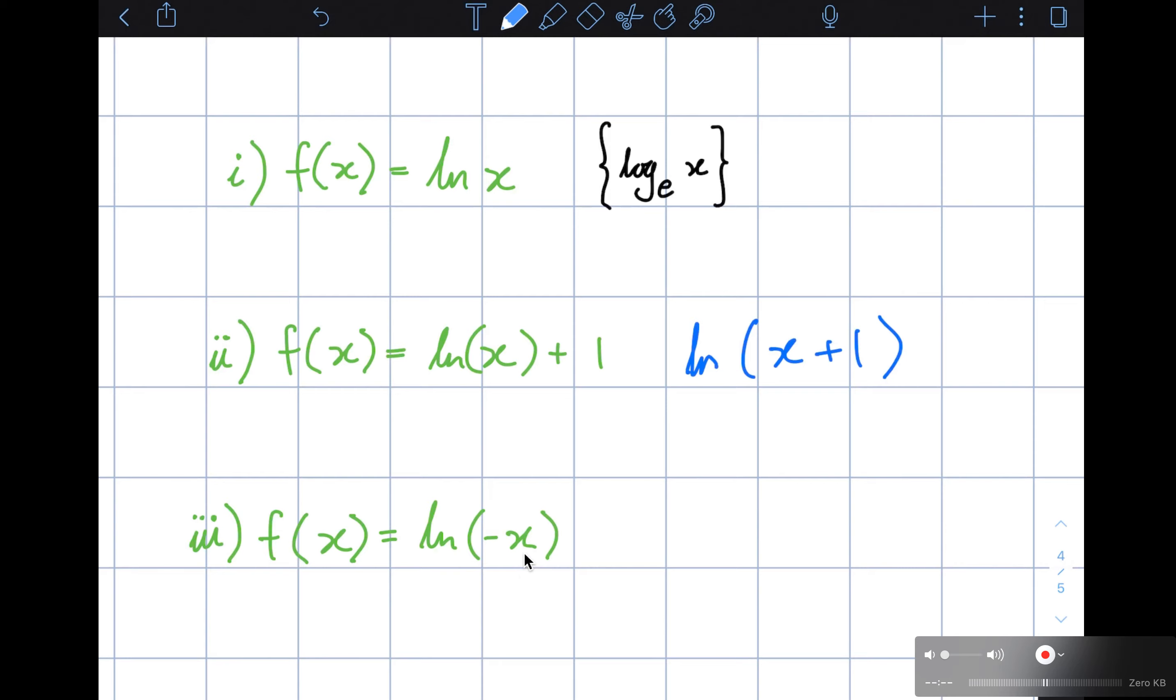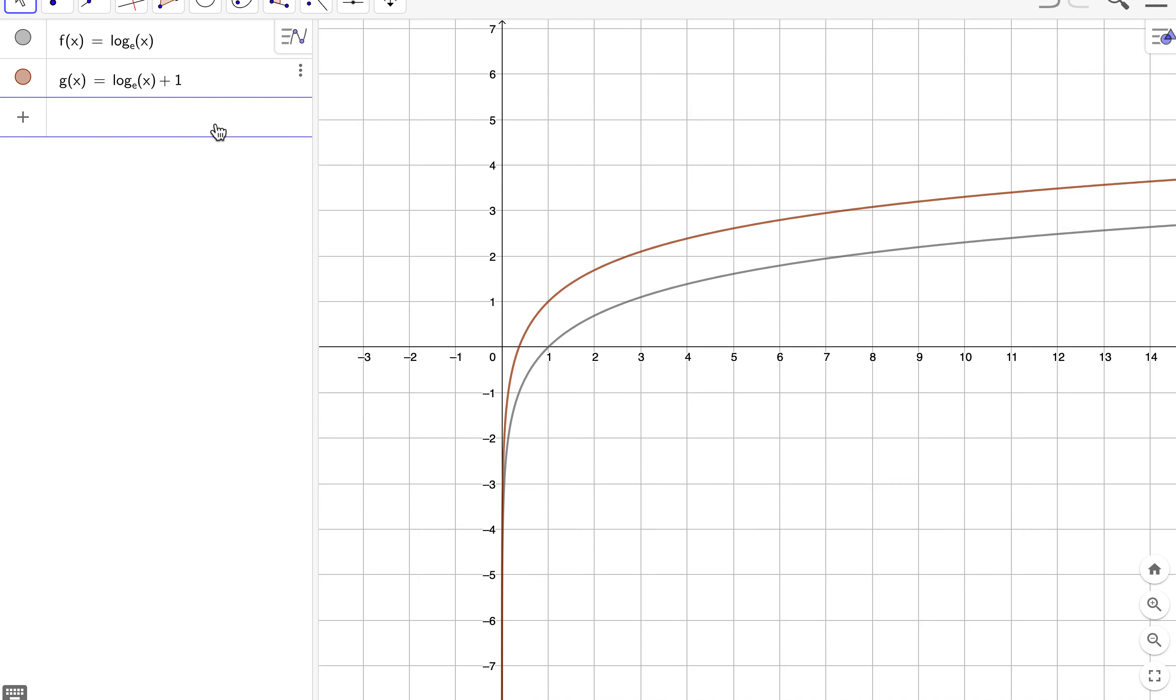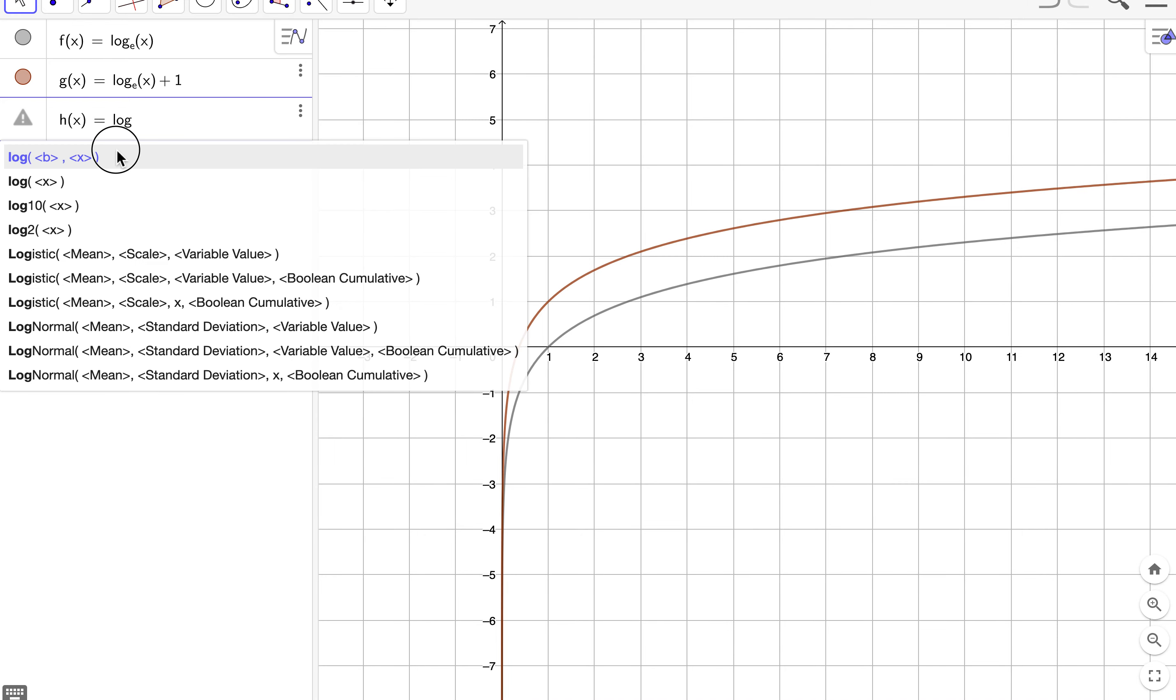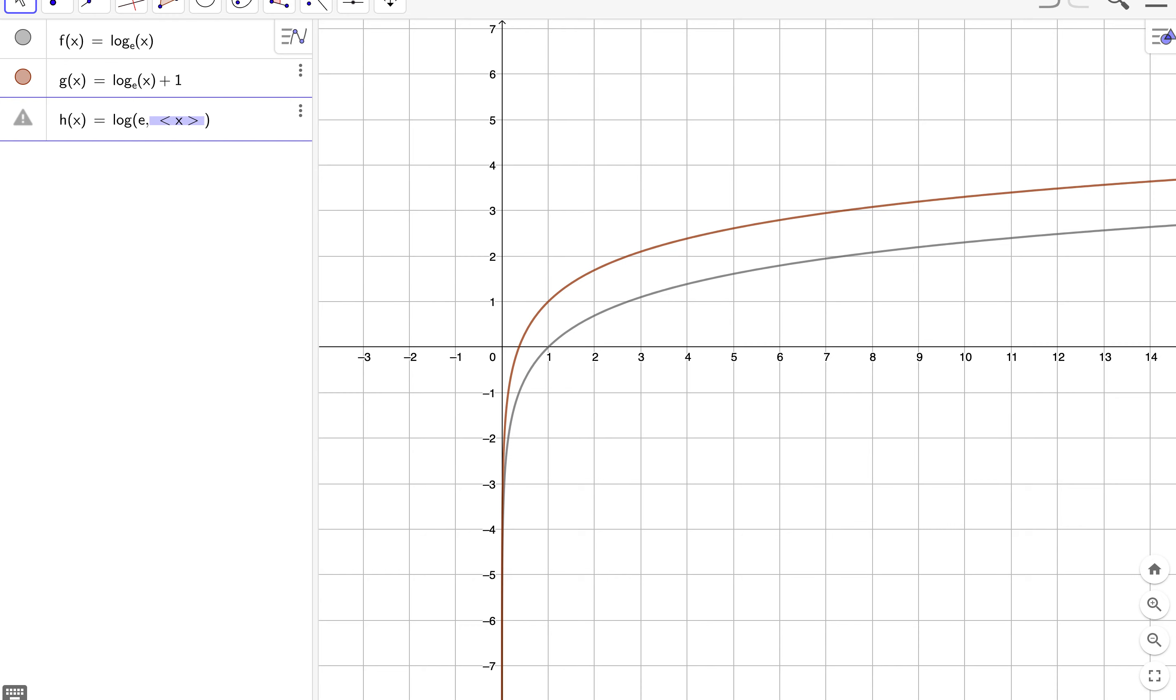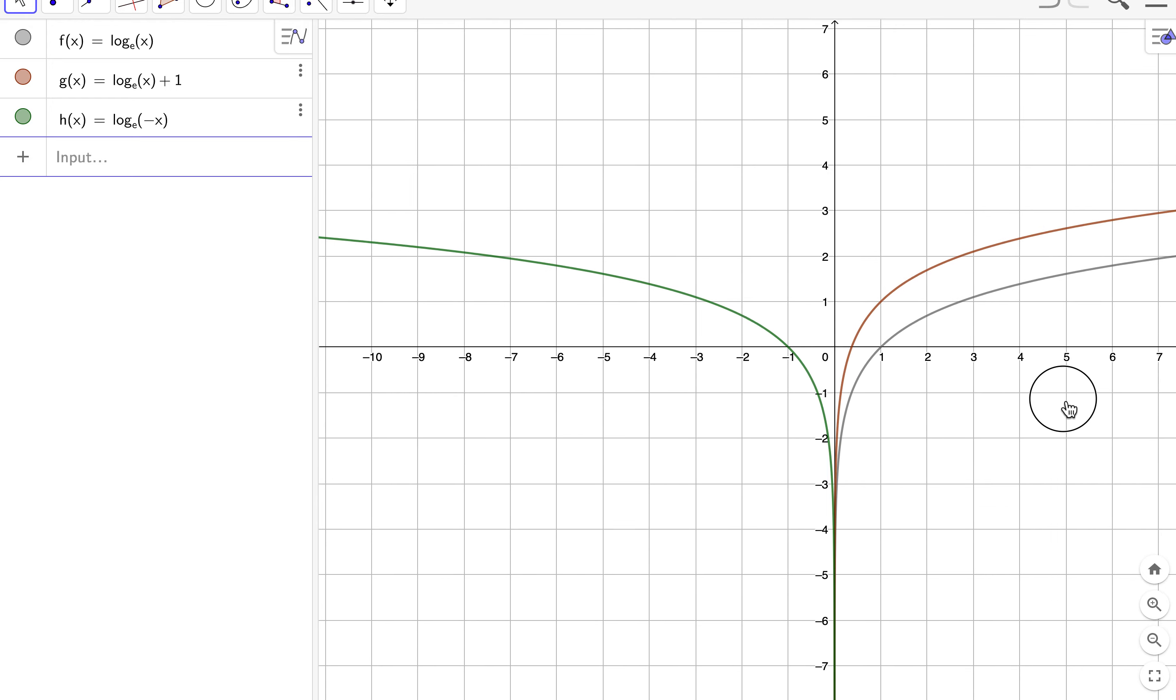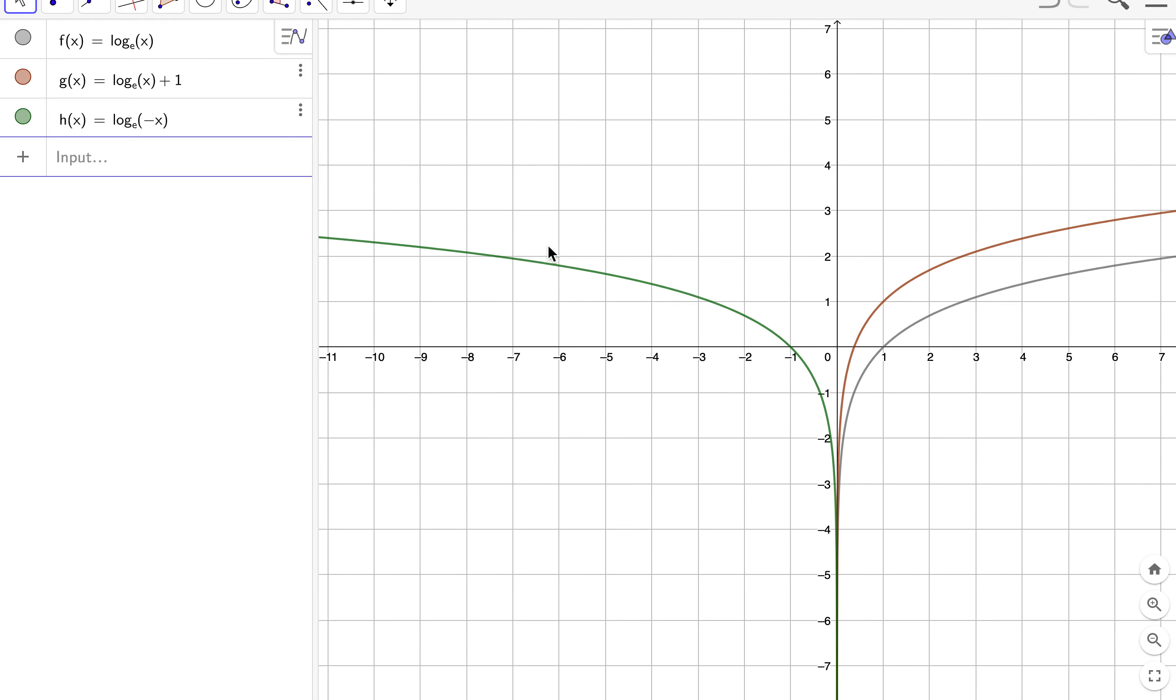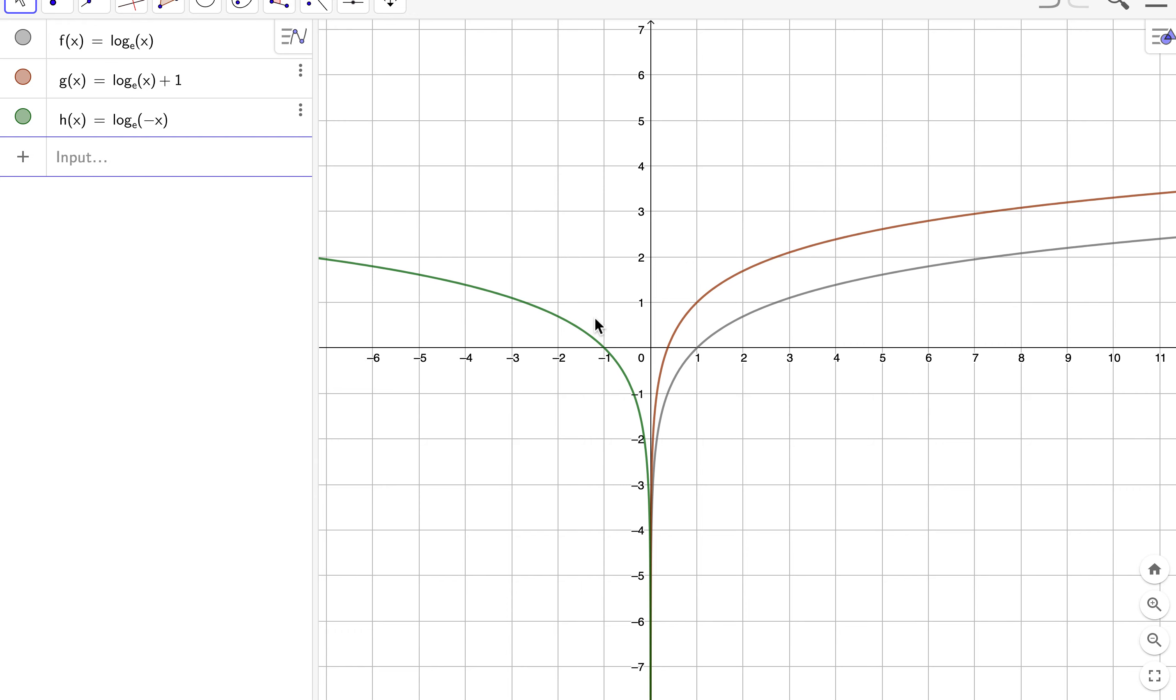We can also take our last one, f(x) equals ln of minus x. So let's make this h(x) equals log of base e of negative x. Notice how it's reflecting to the left versus the original gray one here.